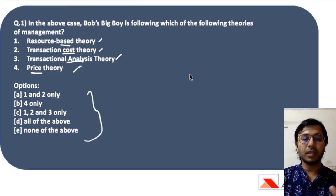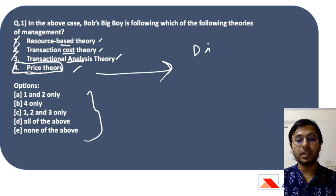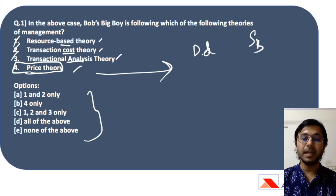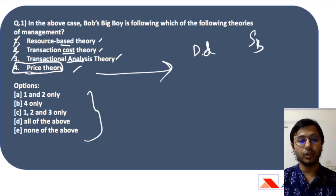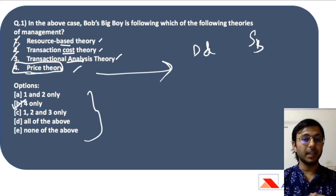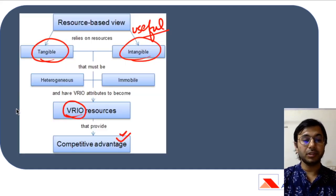All three of those options are certainly not our answers, so we are left with only the fourth one — price theory — which says that price is dependent upon demand and supply. If supply goes up and demand stays the same, the price goes down. The answer is price theory because in the case, the demand for hamburgers in Thailand did not exist. Therefore, they cut out the supply, identified what the demand was, produced what was being demanded, and sold it out very easily. That is how price theory works.